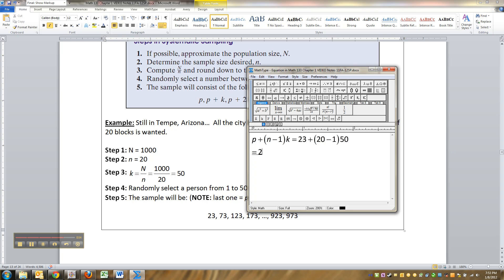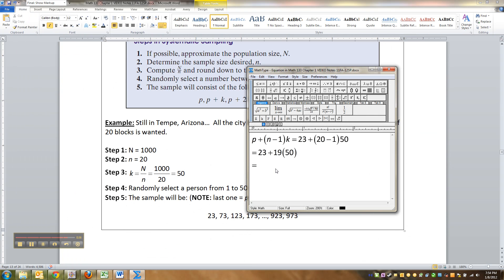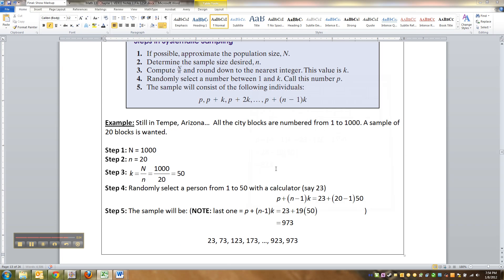So that's twenty-three plus nineteen times fifty, let me go find that in Excel real quick. Equals twenty-three plus nineteen times fifty, nine seventy-three. Okay, gotta love Excel, nine seventy-three.